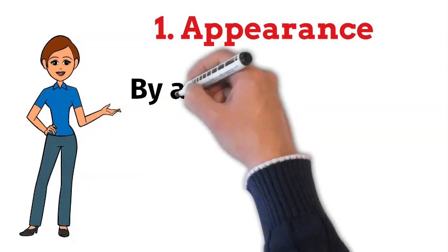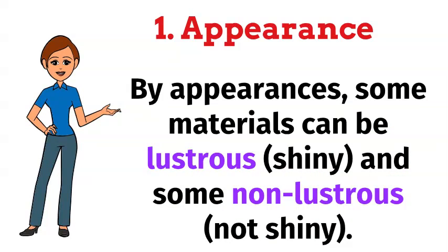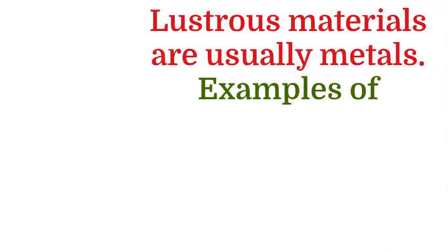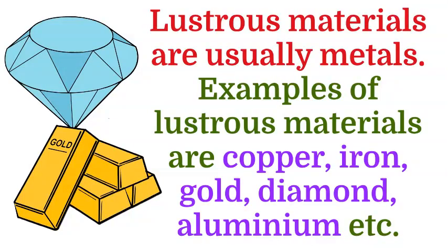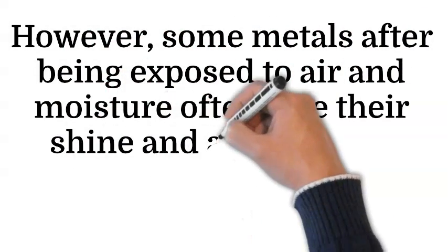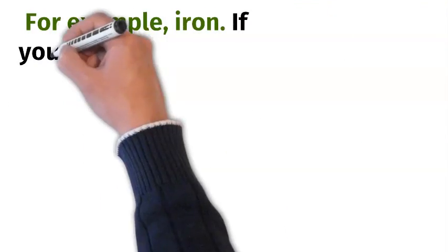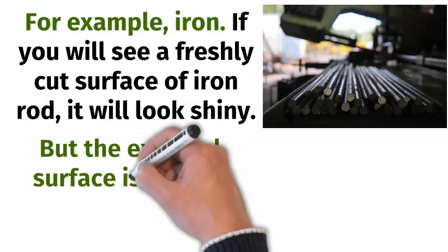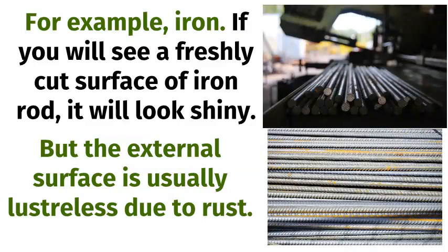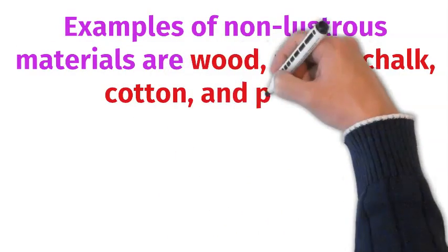First, the appearance. By appearance, some materials can be lustrous, means shiny, and some can be non-lustrous, means not shiny. Lustrous materials are usually metals. Examples of lustrous materials are copper, iron, gold, diamond, aluminium, etc. However, some metals, after being exposed to air and moisture, often lose their shine and appear dull. They are lustrous only on their freshly cut surface. For example, iron — if we see a freshly cut surface of an iron rod, it will look shiny, but the external surface is usually non-lustrous due to rust. Examples of non-lustrous materials are wood, paper, chalk, cotton, and plastic.